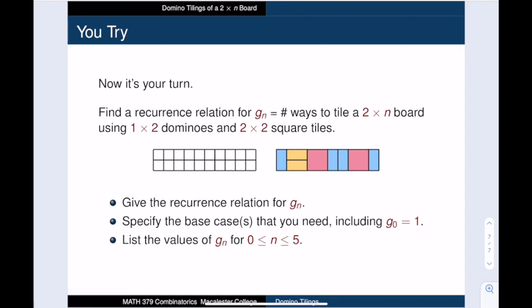Now I want you to follow the same methodology we did for the regular domino tiling. And I want you to come up with a recurrence relation for gₙ, and be sure to specify the base cases that you need, including that g₀ is equal to 1. There's one way to do nothing. And I also want you to list the values of gₙ for n between 0 and 5. All right, have fun.